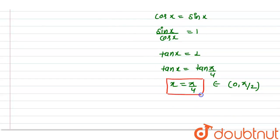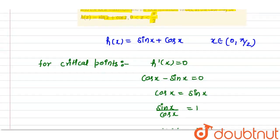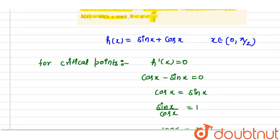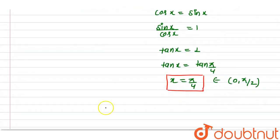Now we need h double dash x. We need to determine if this critical point is a maximum or minimum. So h double dash x is equal to minus sin x minus cos x.